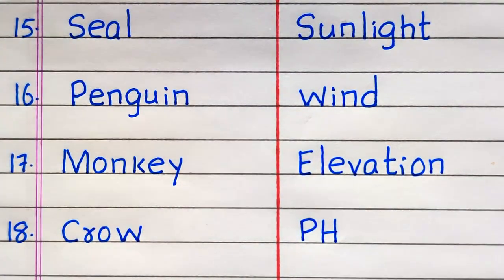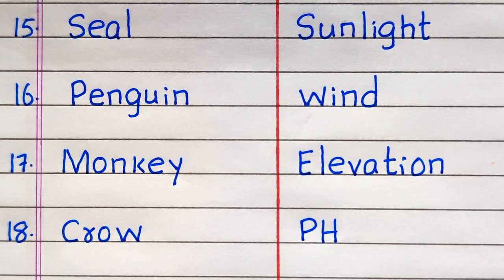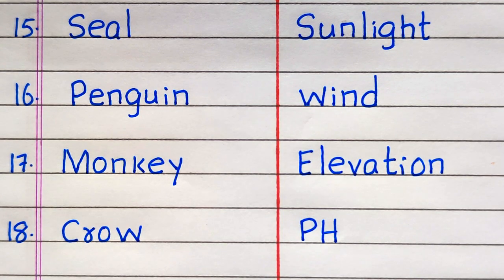15th example of a biotic factor is Seal, 16th Penguin, 17th Monkey, 18th Crow.